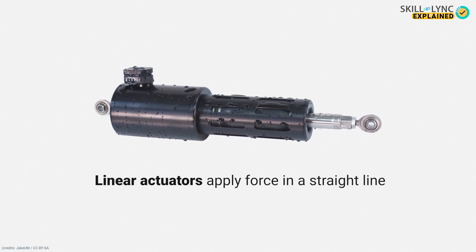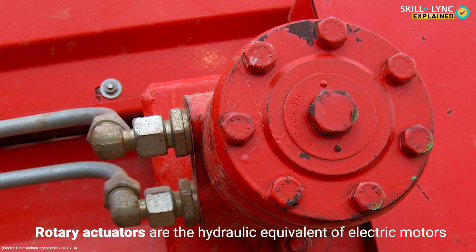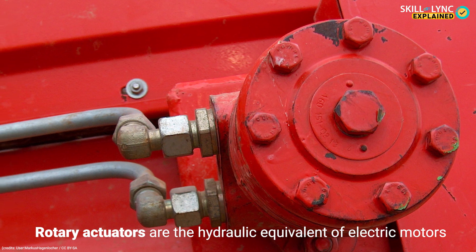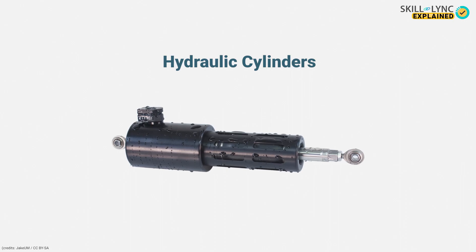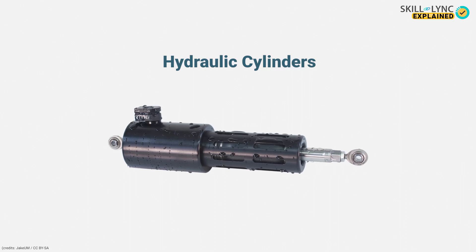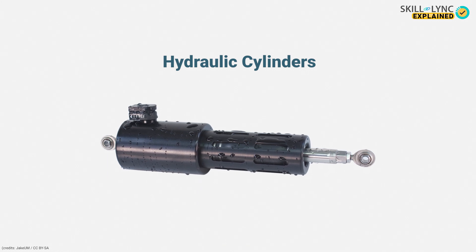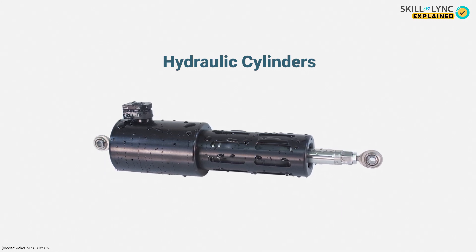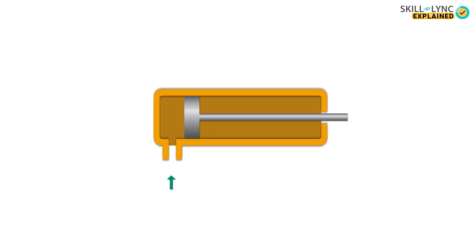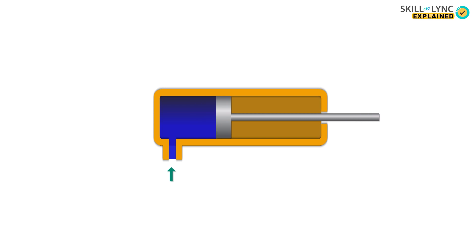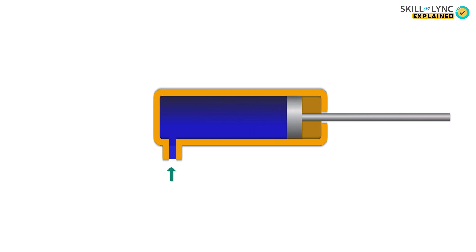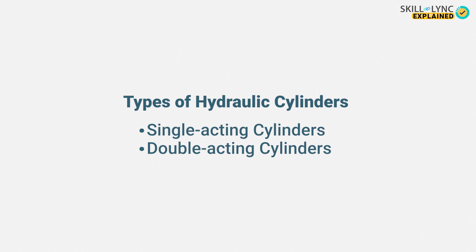Linear actuators convert energy into linear mechanical motion, while rotary actuators convert energy into rotational motion. A hydraulic cylinder is a type of linear actuator which converts fluid power into linear motion. This linear motion is achieved by extending and retracting a piston rod by applying pressure through the hydraulic fluid or oil.